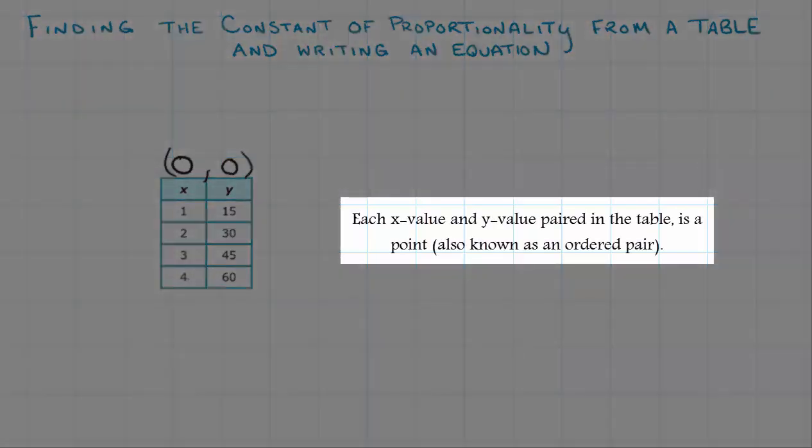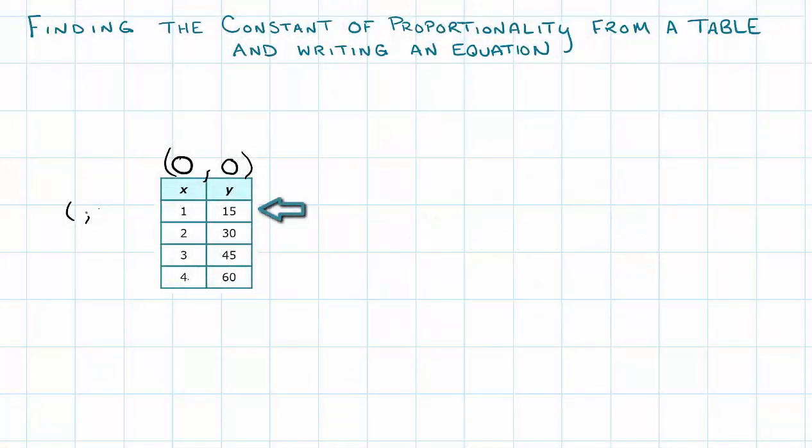You should know that all of these in the table are ordered pairs. 1, 15 is just the ordered pair (1, 15). 2, 30 would be (2, 30), and so on. They're all points that can be on a graph.